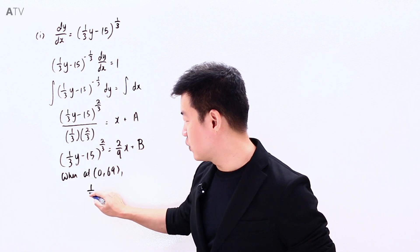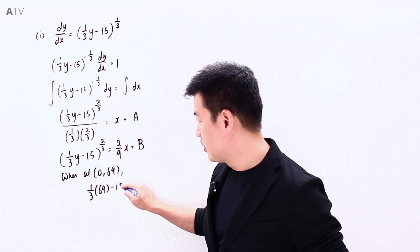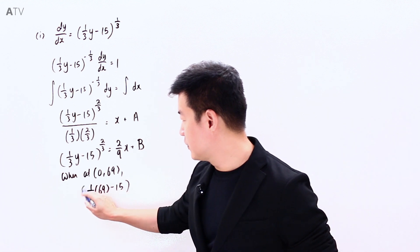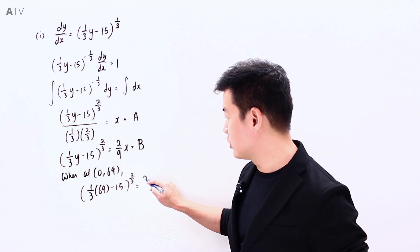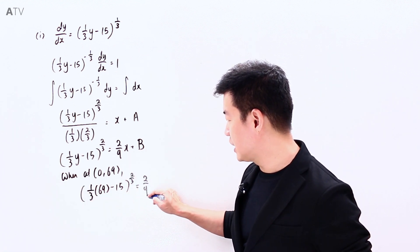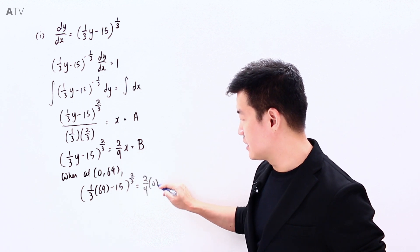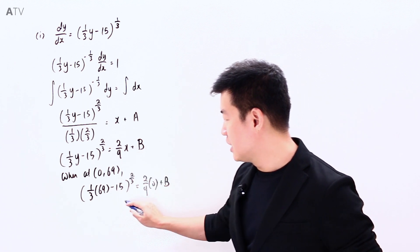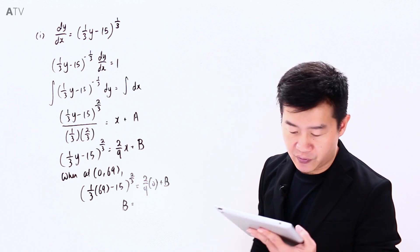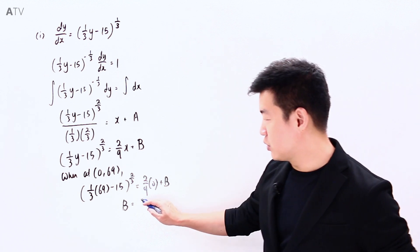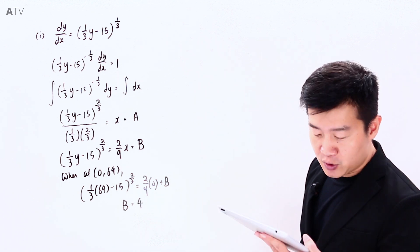When the curve is at (0, 69), y equals 69, so (1/3 × 69 − 15)^(2/3) equals 2/9 times x, where x is 0, plus B. This helps us solve for B: B is equal to 4.